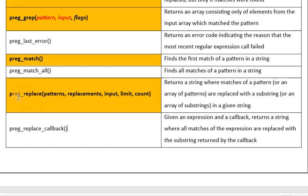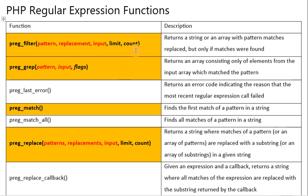The next function is PregReplace. It takes five arguments — the first three are mandatory and the next two are optional. This function works on the same concept as PregFilter and both are similar, so both can be used interchangeably. The only difference is that with PregFilter we get output only if matches were found, but with PregReplace we get output for all inputs regardless of whether a match is found or not.